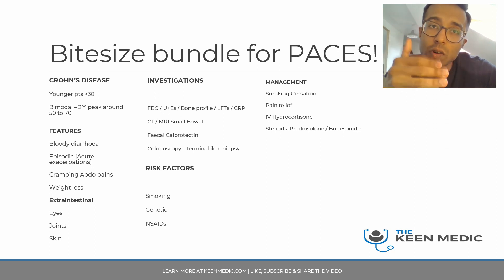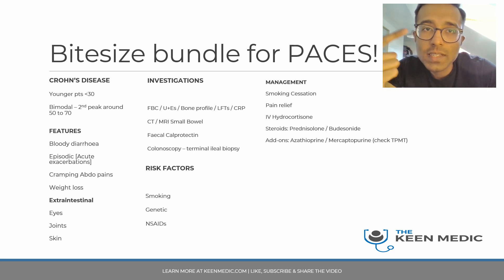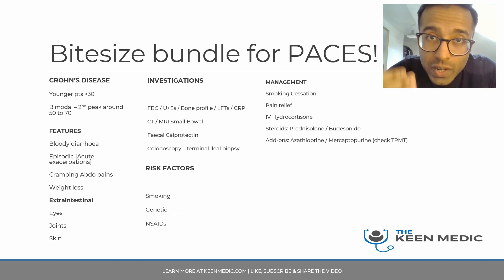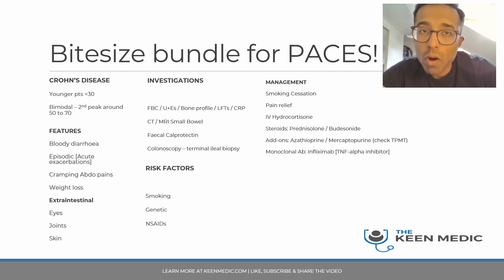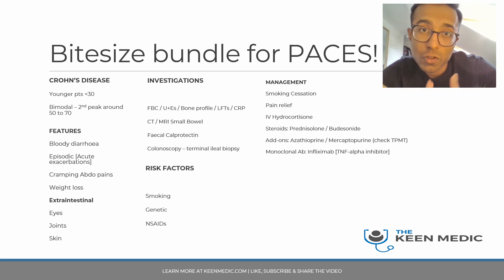The gastroenterologists will initiate longer-term steroids. For add-on therapy — more relevant for your PACES discussion — think about azathioprine or mercaptopurine. These are thiopurines. Before starting them, you must check TPMT (thiopurine methyltransferase) levels, otherwise you risk significant life-threatening bone marrow suppression with azathioprine. Monoclonal antibodies are initiated by the gastroenterologist. The most commonly used is infliximab, a TNF-alpha inhibitor. Before starting these, you must look for evidence of TB, as you can get reactivation of TB if this is missed.